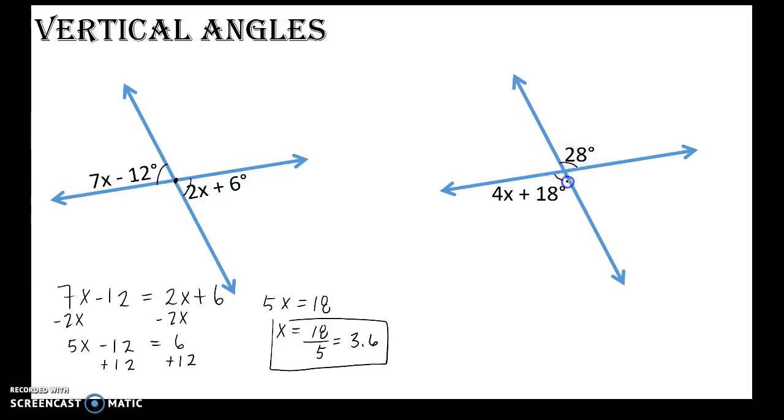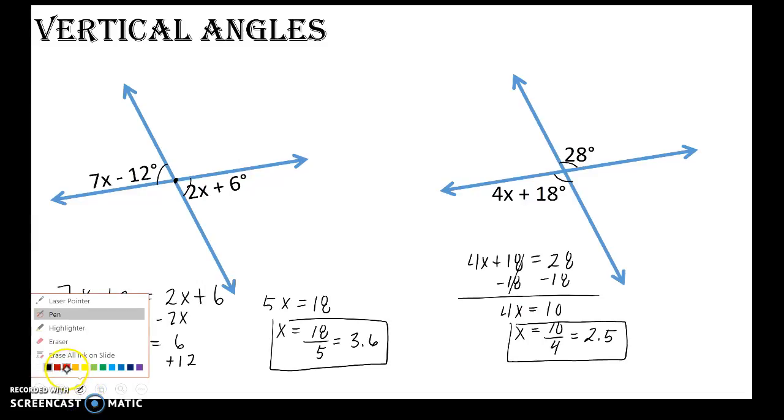The other diagram, vertical angles again. Vertical angles have equal measure, so 4x plus 18 is equal to 28. So 4x plus 18 is equal to 28, I subtract 18 from both sides, 4x is equal to 10. So 10 divided by 4, x is equal to 2.5. Now without any work, I know that this angle measure would be 28 degrees also. Okay, so to find the measure of these angles, we would have to substitute our value for x to find the measure of each individual angle.